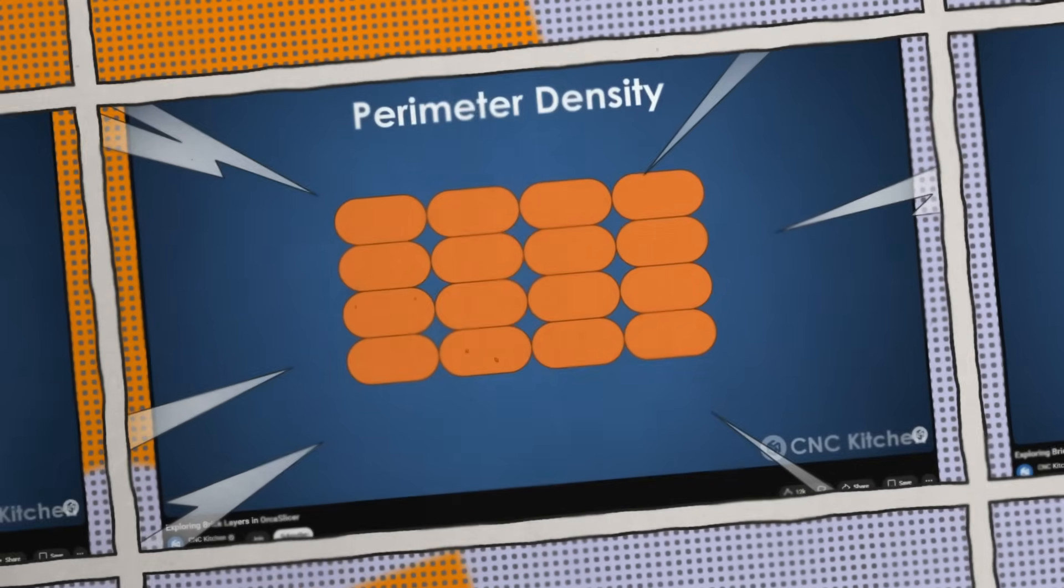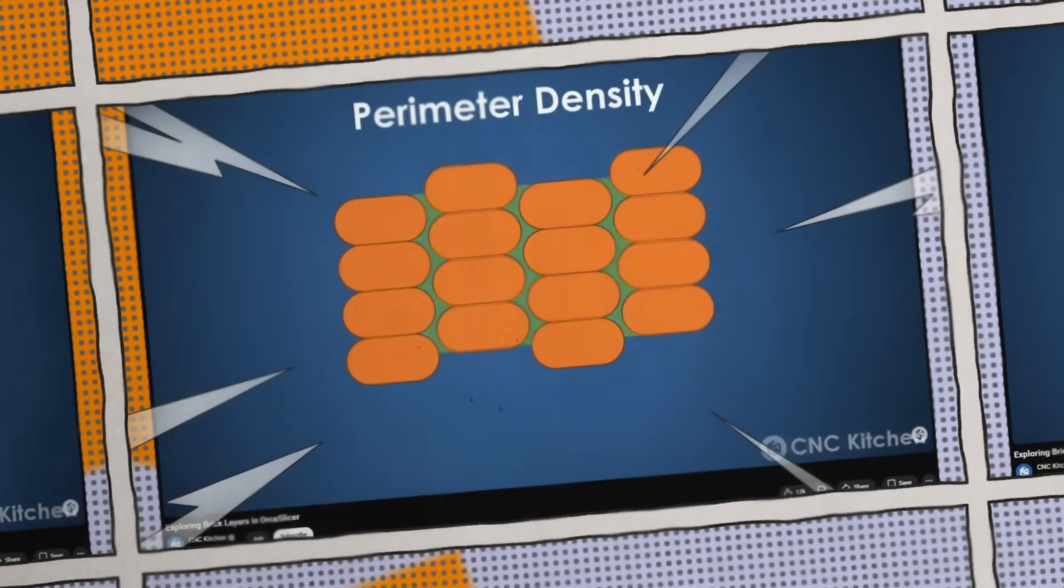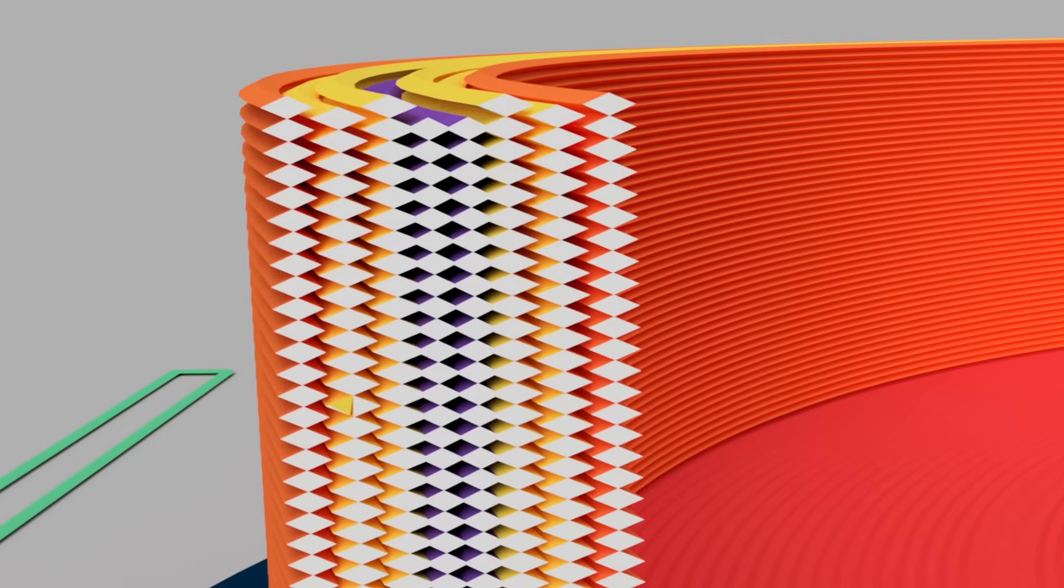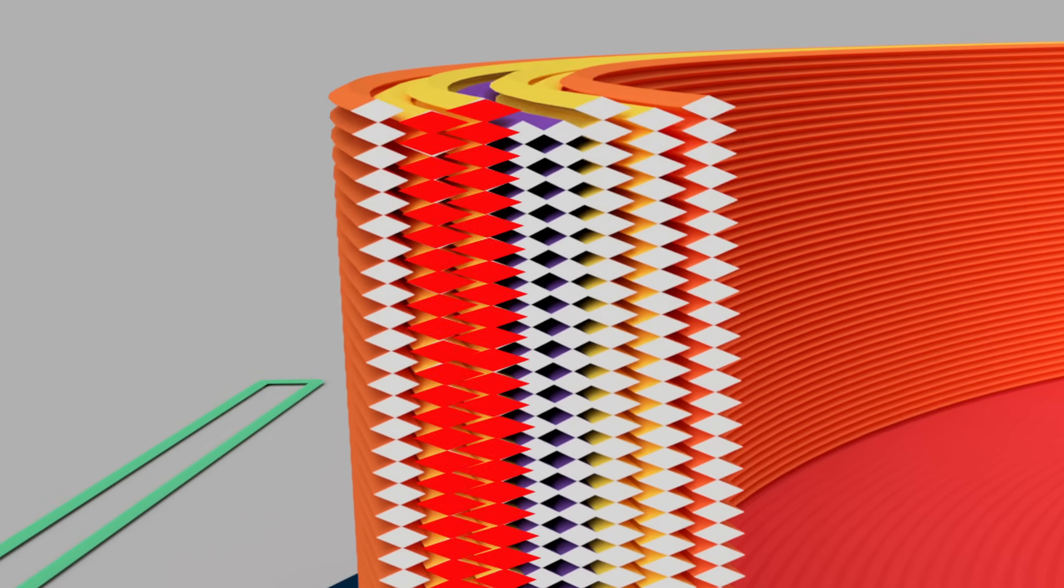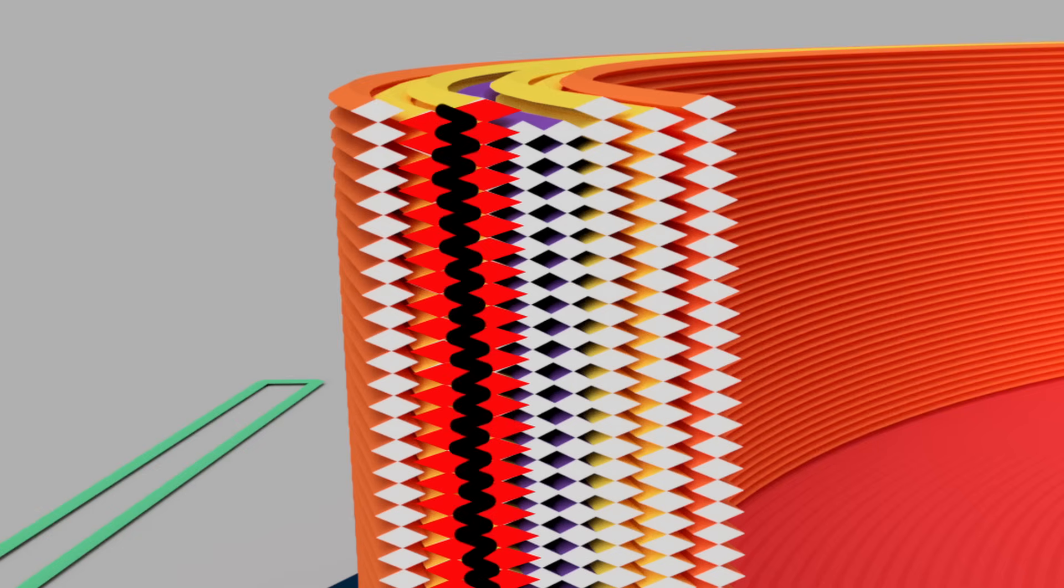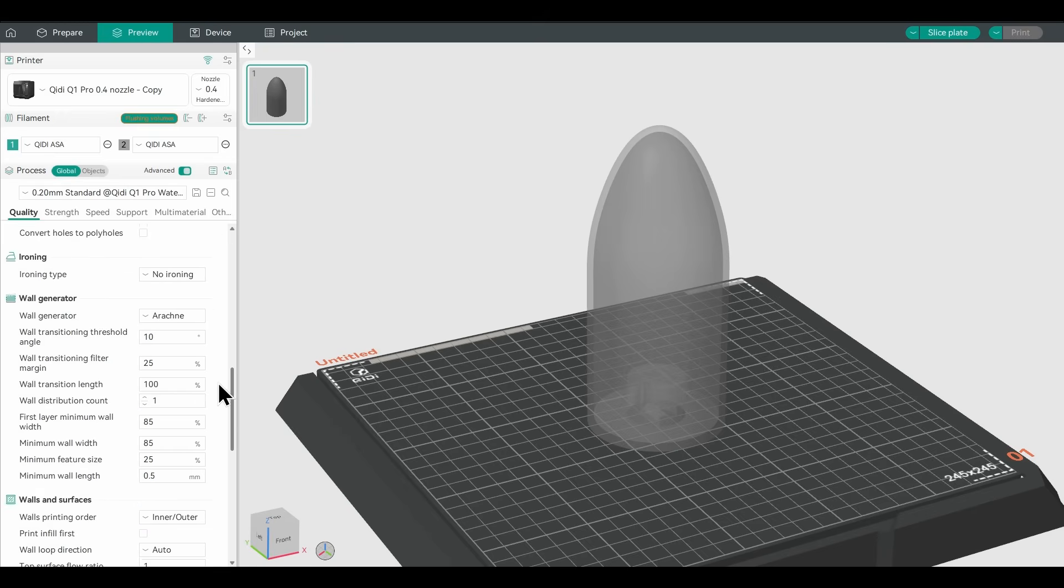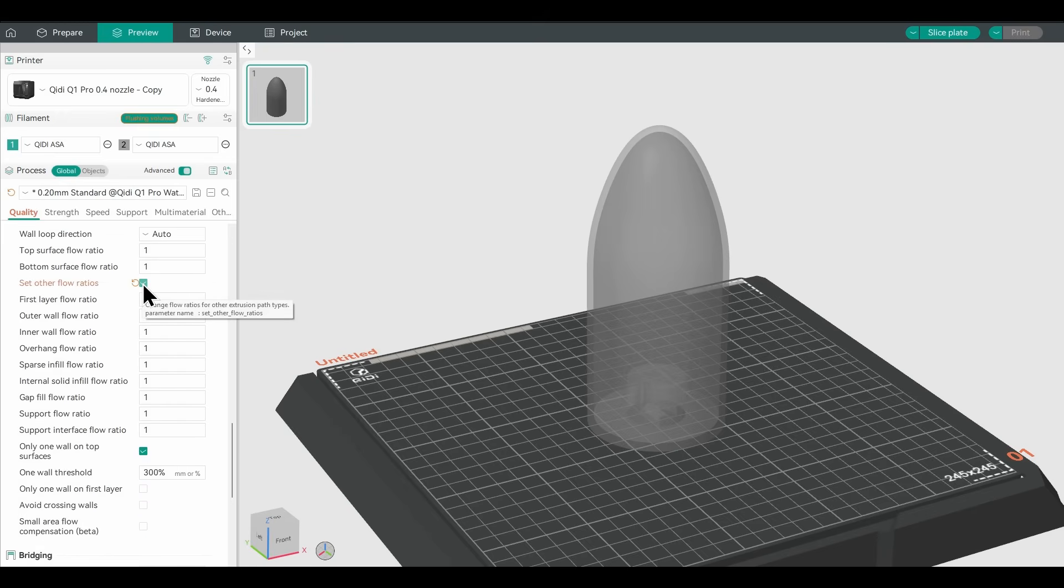Something that Stefan from CNC Kitchen covers really nicely in his brick layers strength testing video, is that because brick layers can pack more efficiently, you really need to increase the extrusion flow multiplier in the internal perimeters to take up the space between the shells to maximize the contact surface and print fill factor in this region. So let's see if increasing the extrusion multiplier for the internal perimeter layers that brick layers are printed in has any effect.